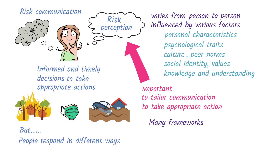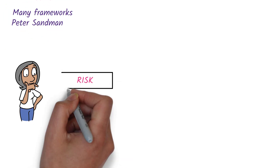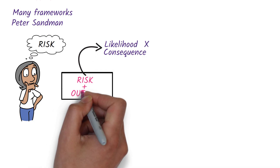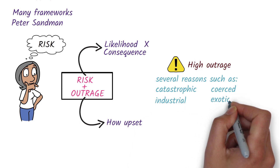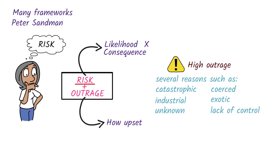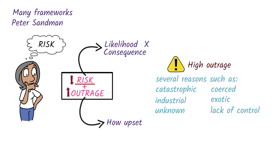Let's explore a well-known approach developed by risk communication expert Peter Sandman. In Sandman's model, what risk means to people is determined not only by technical risk — the likelihood and consequence of a hazard — but also by a factor called outrage. Outrage refers to how upset people are about the risk. Outrage can be high for several reasons, such as when the risk is catastrophic, coerced, industrial, exotic or unknown, or when there's a lack of control over the risk. Risk and outrage are not always proportional — there can be high risk and low outrage, or low risk and high outrage. Therefore, effective risk communication should be mindful of and address both the actual risk and the outrage.